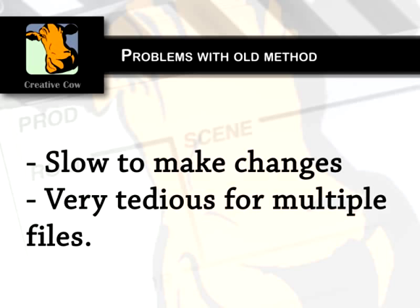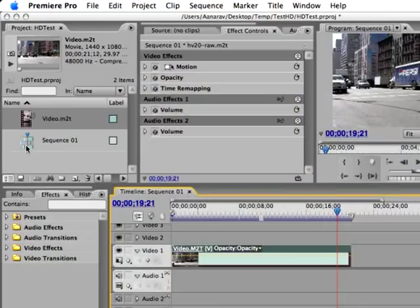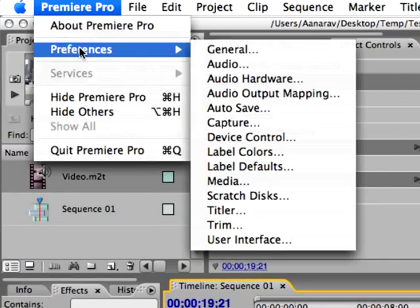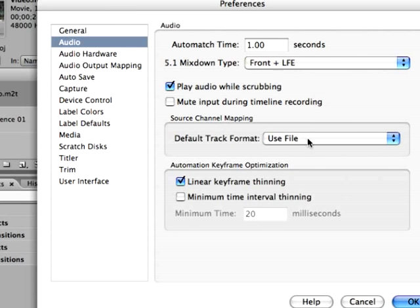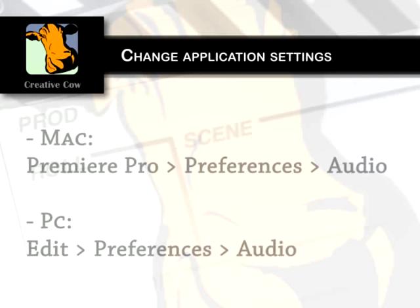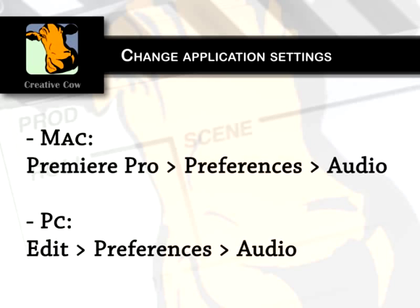To do so, go to Premiere Pro, Preferences, Audio, and set the default track format to mono. If you're on a PC, this option can be found by going to Edit, Preferences, Audio.